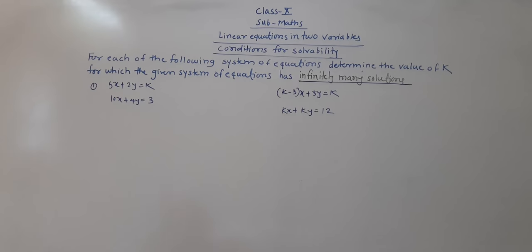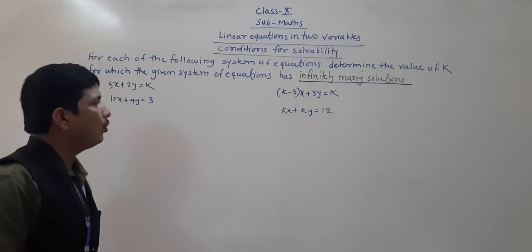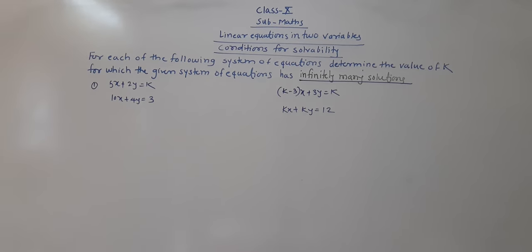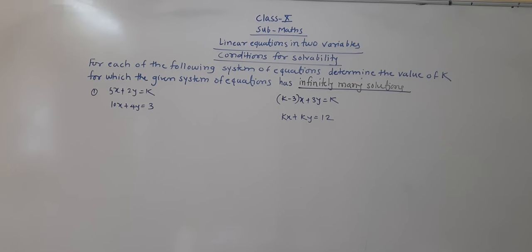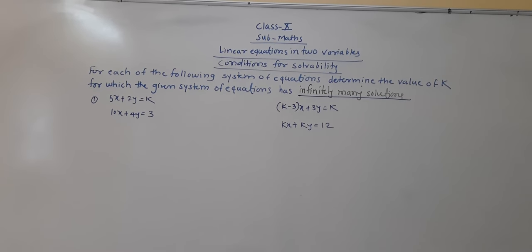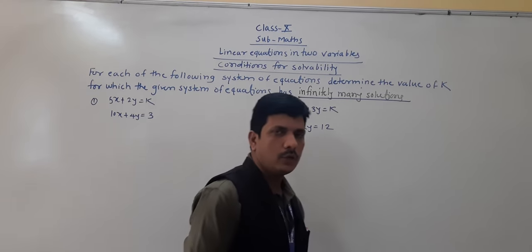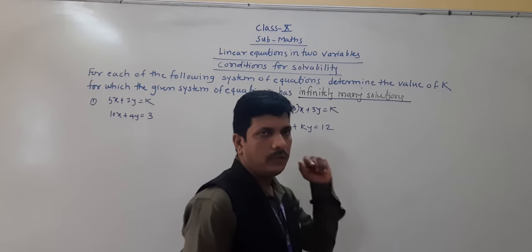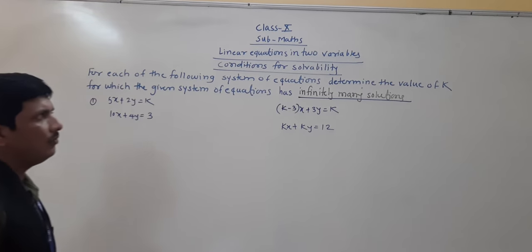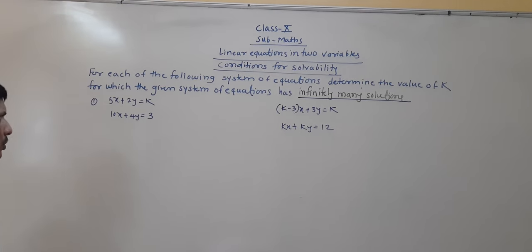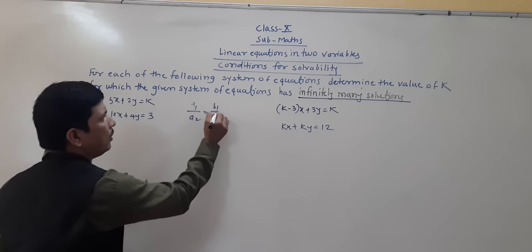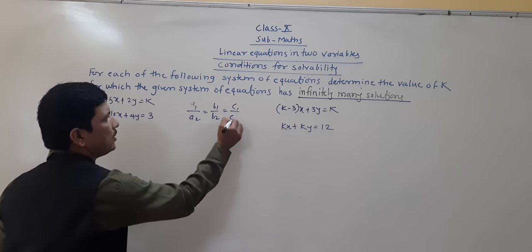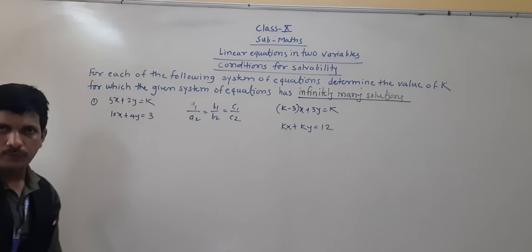Now our next question: for each of the following systems of equations, determine the value of k for which the given system of equations has infinitely many solutions. We have seen this condition — when there are infinitely many solutions, the ratio is a1 by a2 is equal to b1 by b2 is equal to c1 by c2.